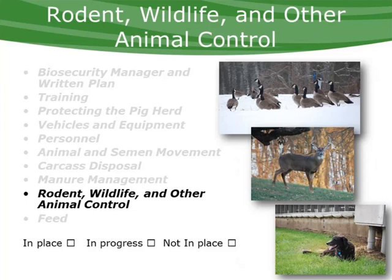Concerning rodents, wildlife, and other animals, the plan includes that a rodent and fly control program needs to be in place, and facilities need to be able to keep out animals like dogs, deer, and feral swine from entering the buildings. That is very important from a disease control standpoint.